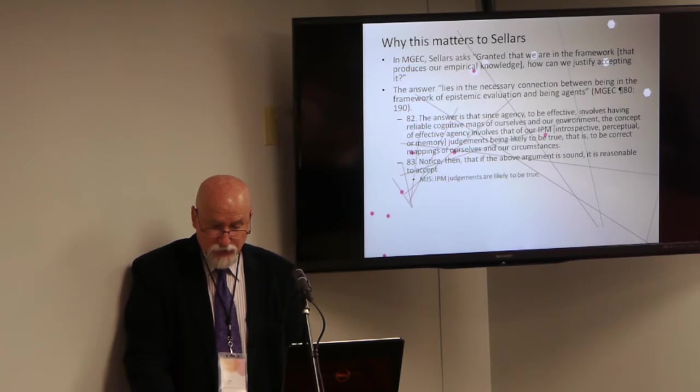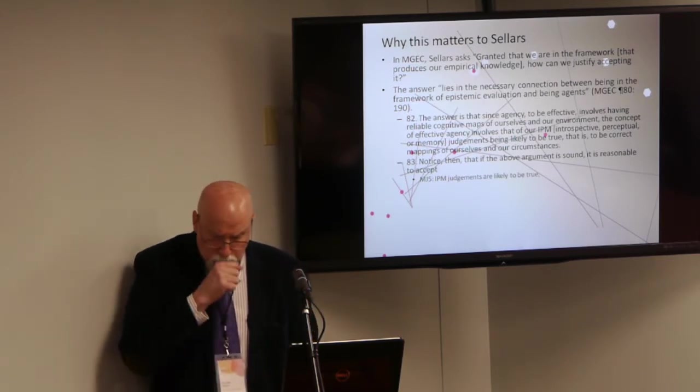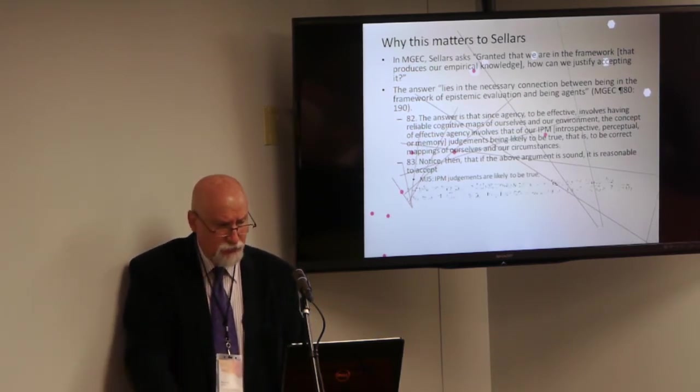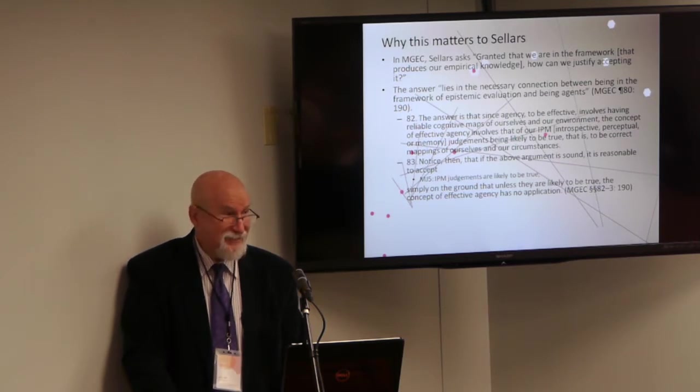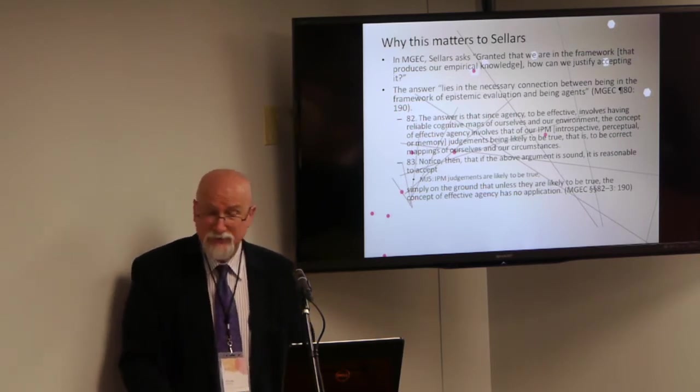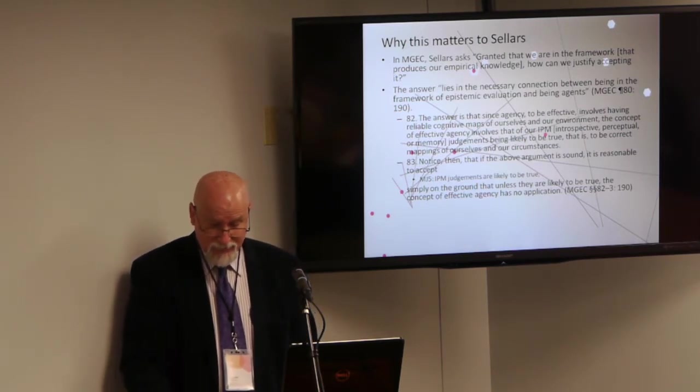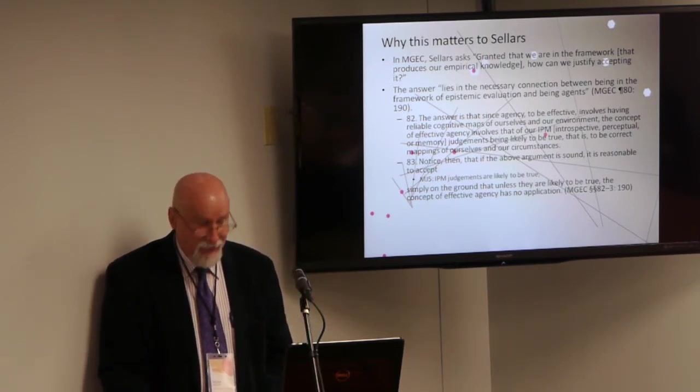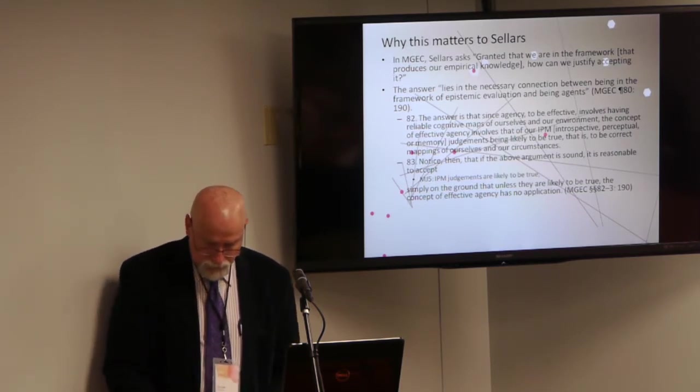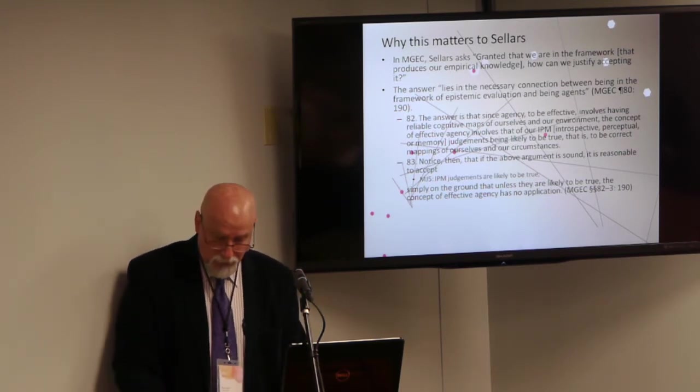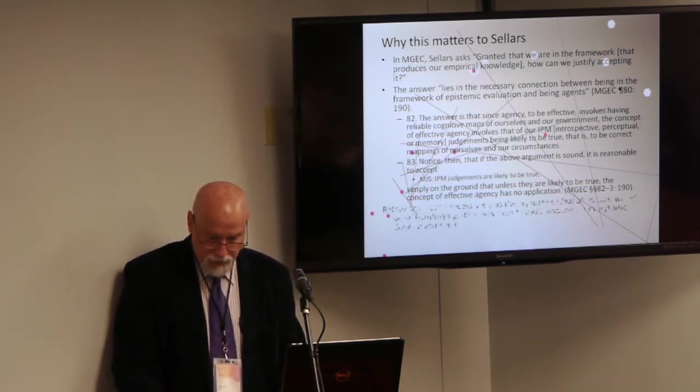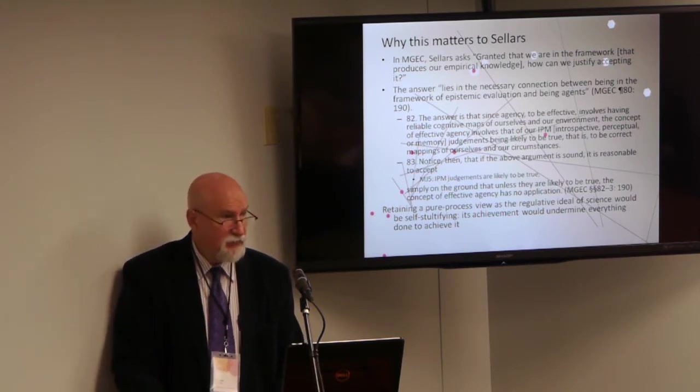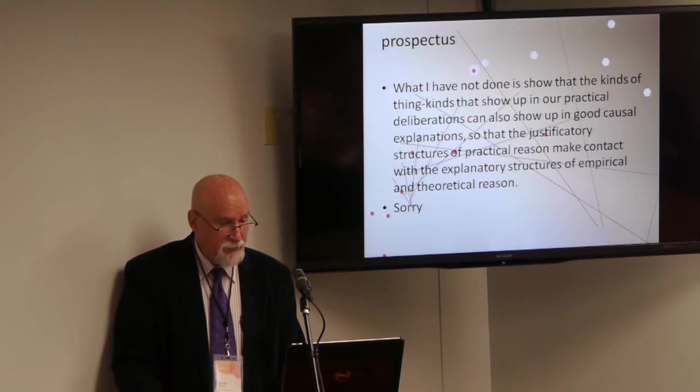Notice, then, that if the above argument is sound, it is reasonable to accept what he calls MJ-5, IPM judgments are likely to be true, simply on the ground that unless they are likely to be true, the concept of effective agency has no application. So my argument is that in the pure process view of the world, the concept of effective agency makes no sense. We don't know how to tack it onto the world and how to apply it. And then, it turns out, the claims to knowledge turn out to be ungrounded. So in my view, then, Sellars' belief that there is a regulative ideal of a system of pure processes that informs science ends up being, in a way, self-stultifying. Its achievement would undermine everything done to achieve it.